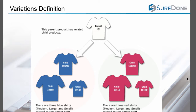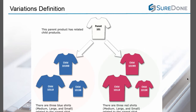For example, you may have a parent or umbrella t-shirt that is connected to the blue and red children as well as the small, medium, and large children. You can see that this creates a branch system for child listings — here we have first branched out by color and then we are separating them out further, in this case by size.